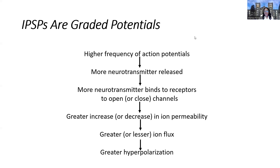Another way to bring about an EPSP is if you close negative channels or a potassium channel, because potassium wants to leave the cell. If you close a potassium channel or a chloride channel, that's another way to bring about an EPSP. So depending on the type of channel and depending on whether it's opened or closed will determine an excitatory membrane potential change versus an inhibitory membrane potential change.